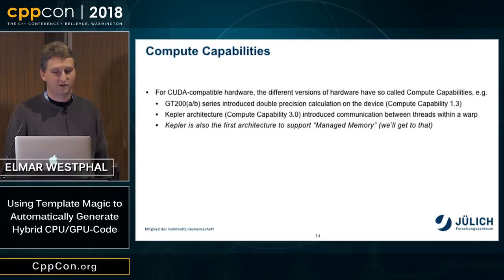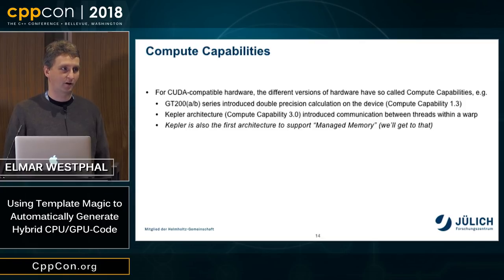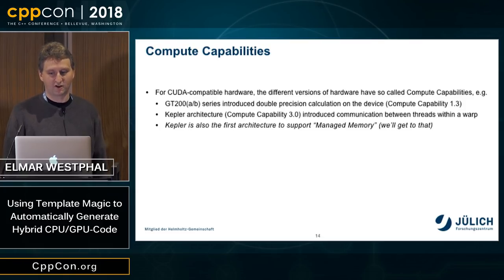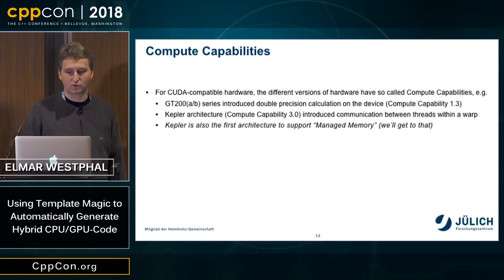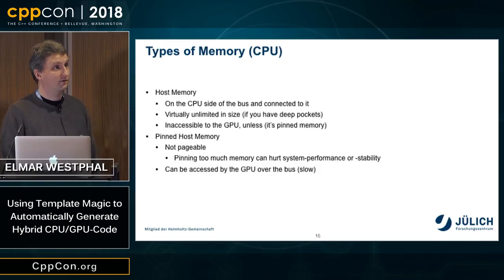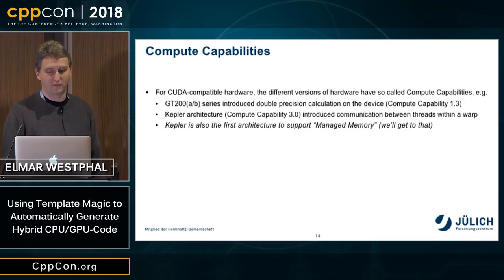What the hardware can do is called compute capability, and this has changed over time. Back when I started, we needed double precision compute capability, which arrived around 2008. Some features we need here came with the Kepler architecture in 2012 — notably, Kepler was the first to support managed memory, which is what we need here.